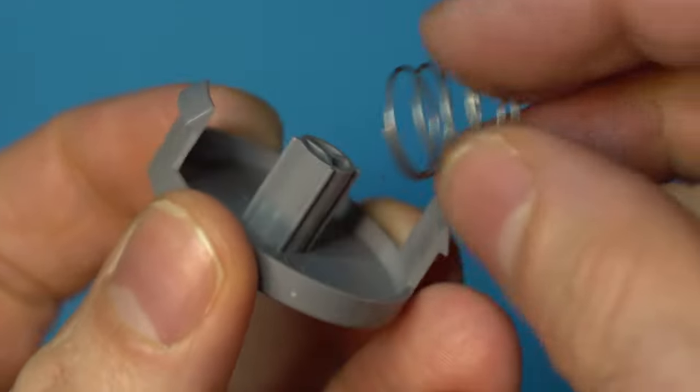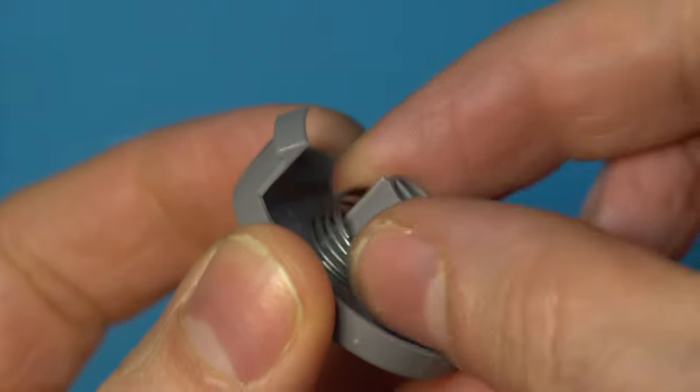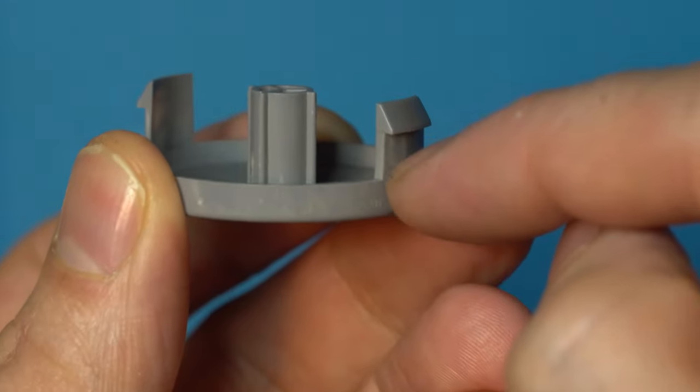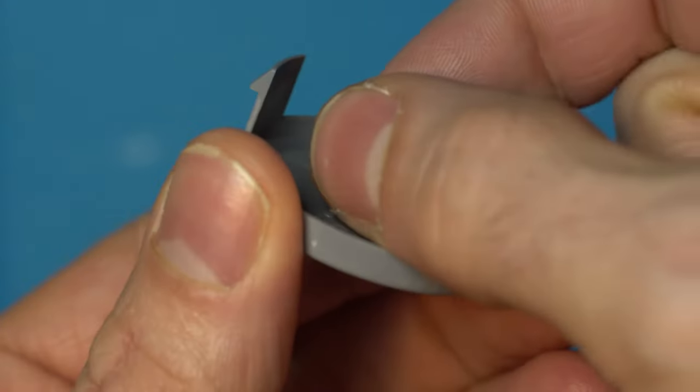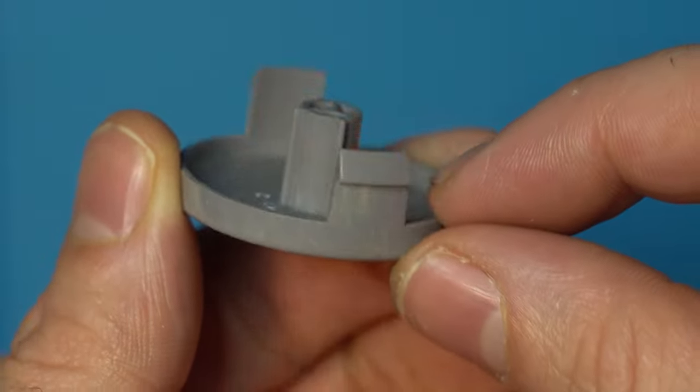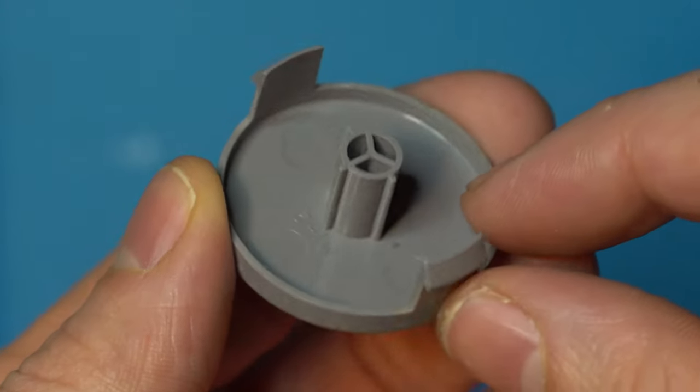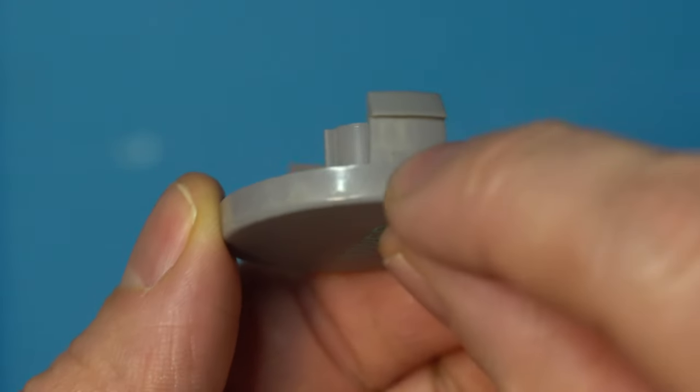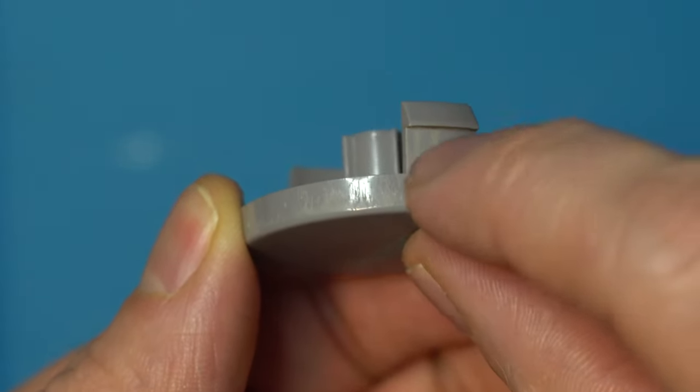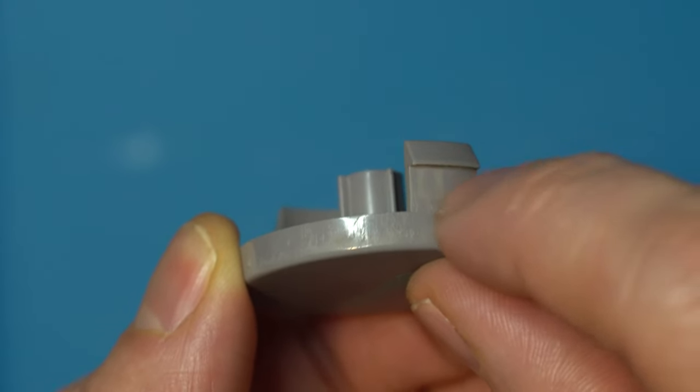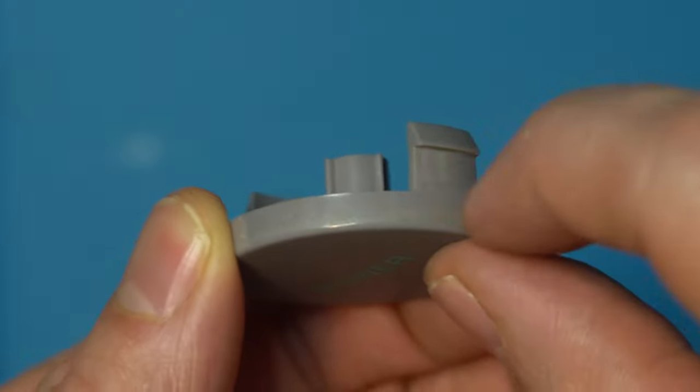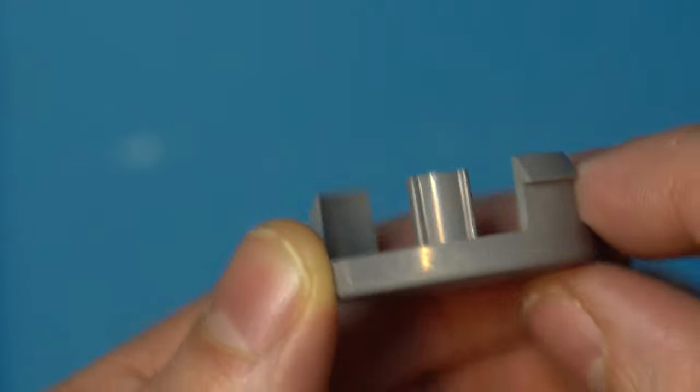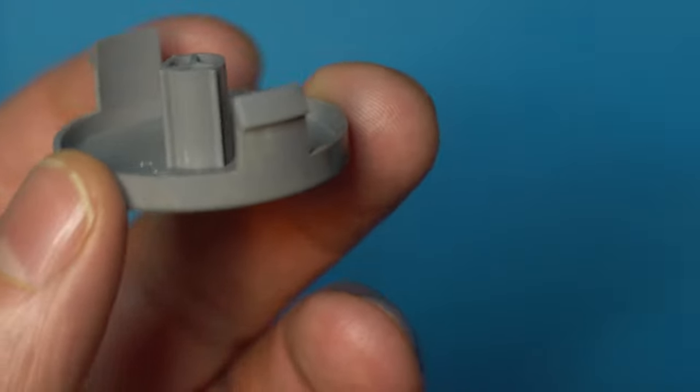We have a spring, plastic clips that hold it in, and the center section which acts as a centering piece for the spring. You can see where the plastic rubs, which creates the squeaking. Sometimes if this gets worn down or there's dust in here, that can cause it to get stuck.